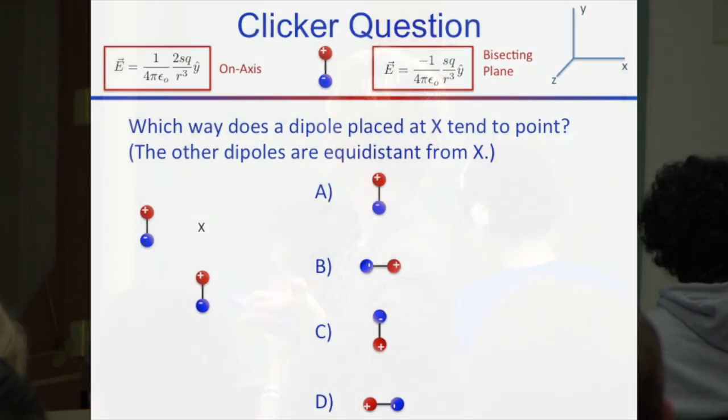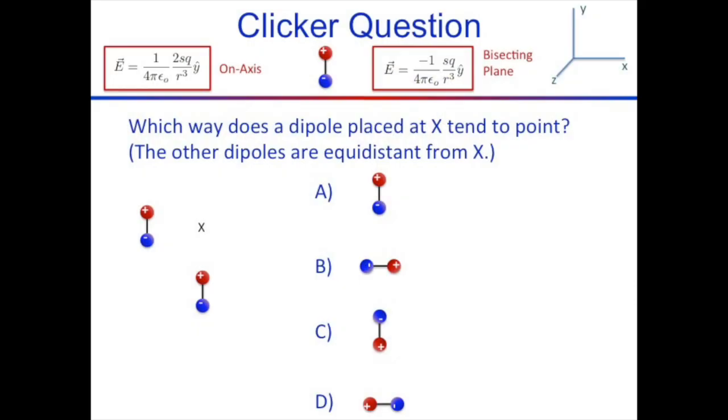One line of reasoning: consider each dipole separately. The top dipole would tend to align the free dipole downward; the bottom dipole would tend to align it upward. There's a factor of two between these — if we choose based on whichever field is stronger, the stronger one wins. A student suggests choosing A for lack of a better option, because of the factor of two between the on-axis and bisecting-plane fields.